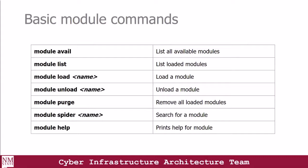Let's take a look at basic module commands. The module available command lists all the available modules, and module list helps you view all currently loaded modules in your environment. Module load followed by a module name, for example module load python, loads a particular module. You can also unload a module using module unload, and module purge removes all loaded modules. To search for a module, use module spider followed by the module name. The module help command prints help for the module, giving you information about all available options.